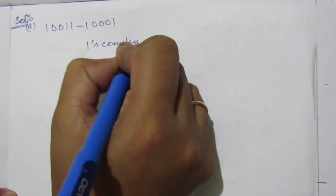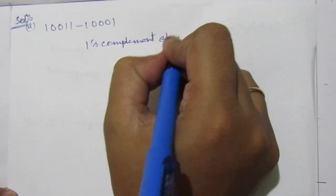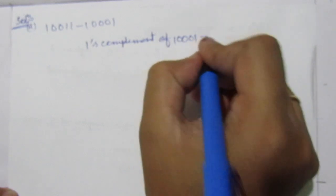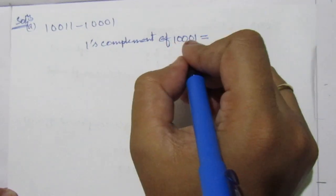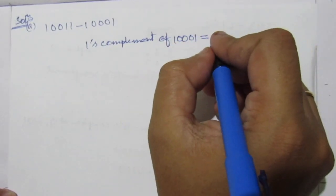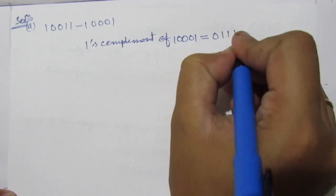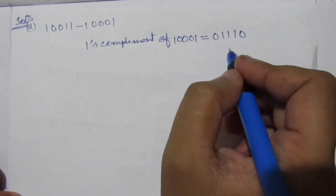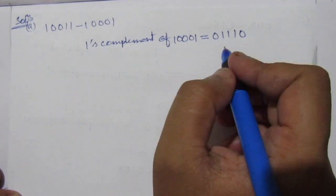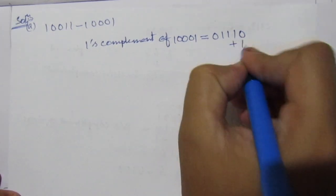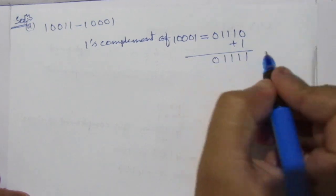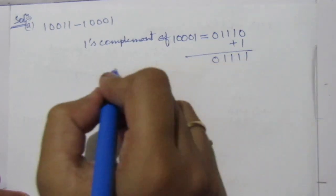First of all, let us find out the 1's complement. The 1's complement of 10001 — you just invert the digits — equals 01110. Then you add 1 to this 1's complement to get the 2's complement. So you add 1 and you will get 01111. So this is the 2's complement.